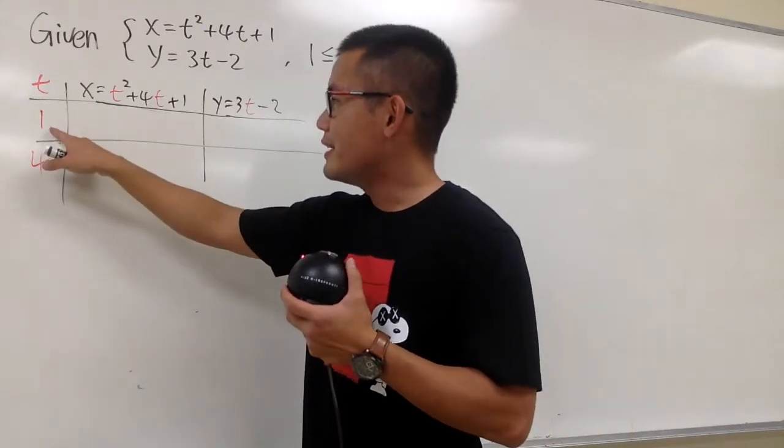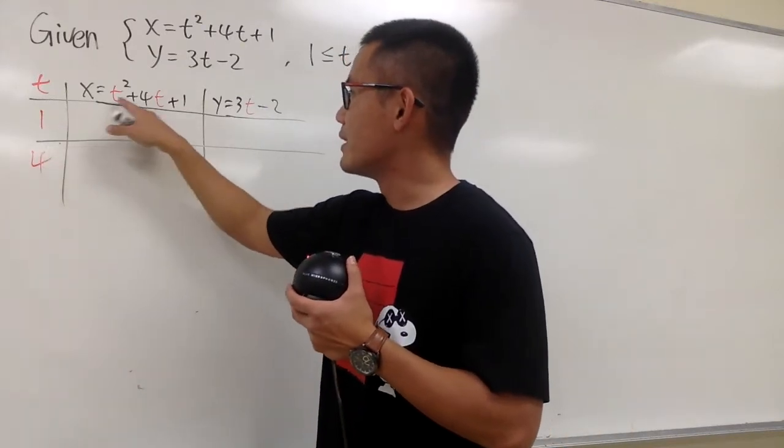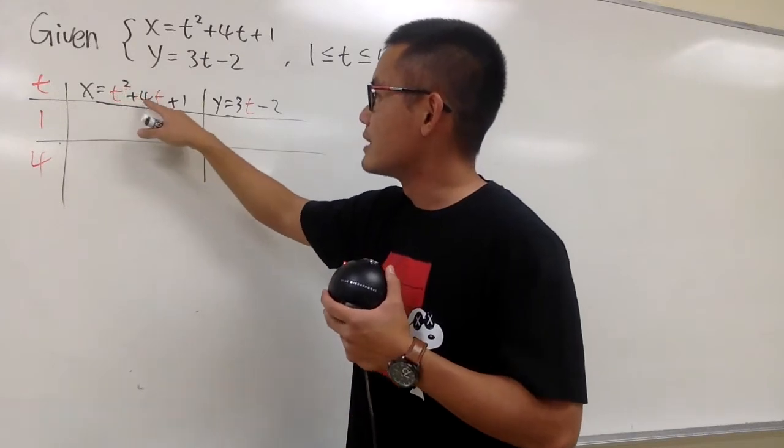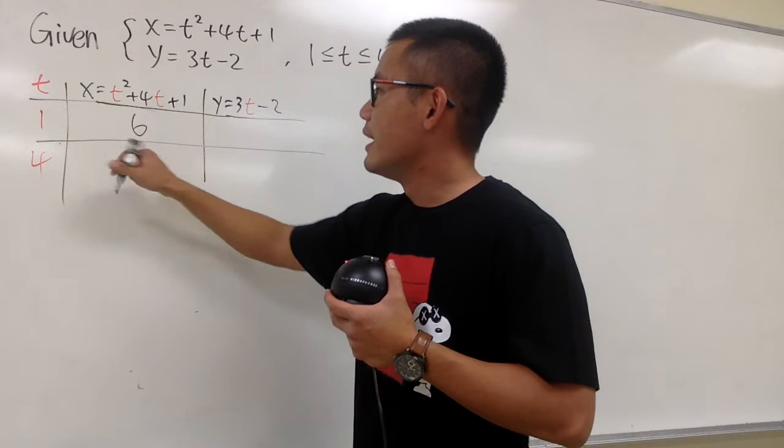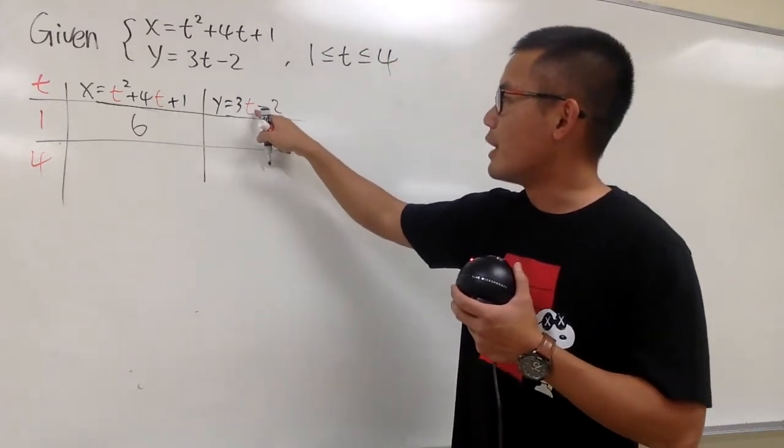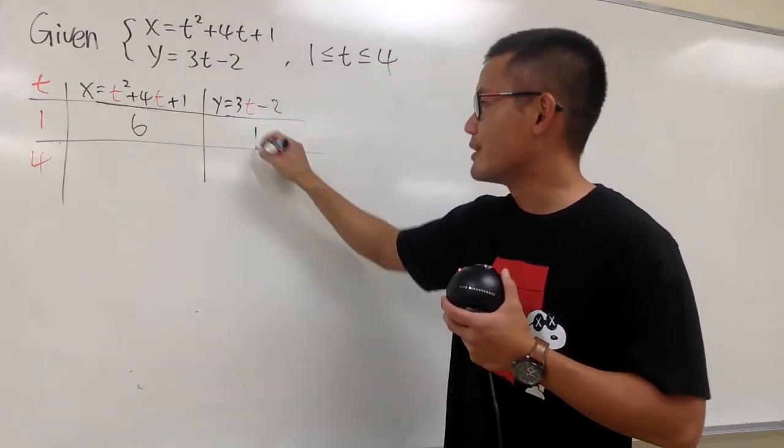Alright, so the idea is that you just go ahead and plug in 1 into the t, so let's do this in your head. 1 squared is 1, plus 4 times 1 is 4, 1 plus 4 is 5, plus 1 is 6. And then plug in 1 in here, 3 times 1 is 3, minus 2 is 1.